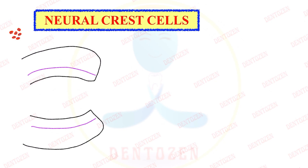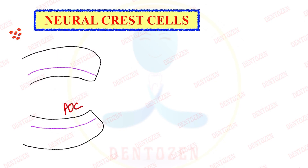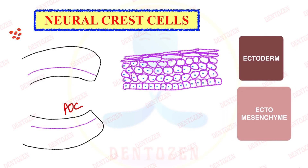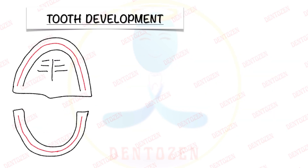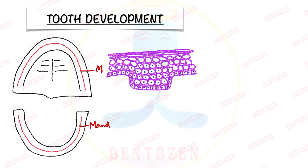Let's do a quick recap from the first video. In the primitive oral cavity, there are two structures: ectoderm and ectomesenchyme. Ectoderm is our stratified squamous epithelium and will only become enamel. Ectomesenchyme, because it contains neural crest cells, will become the rest of the structures. Ectoderm cells divide and form a band-like horseshoe-shaped structure in the oral cavity — one in the maxilla and one in the mandible — known as the primary epithelial band.